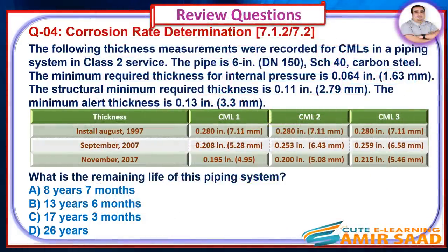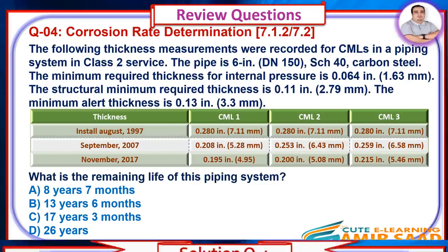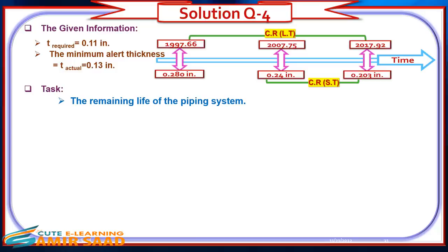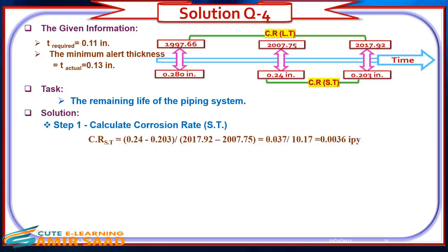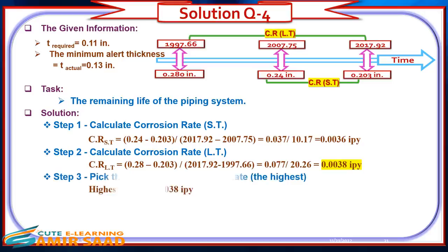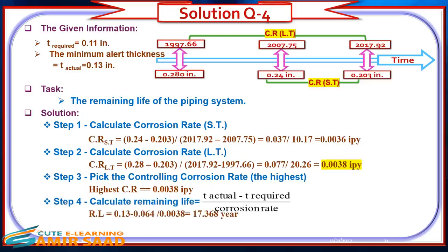Question 4: The following thickness measurements were recorded for CMLs in a Class 2 piping system. The pipe is 6-inch Schedule 40 carbon steel. Minimum required thickness for internal pressure is 0.064 inch, structural minimum is 0.11 inch, and minimum alert thickness is 0.13 inch. Solution: Step 2: Short-term corrosion rate. Step 3: Long-term corrosion rate. Step 4: Pick the highest. Calculate shortest remaining life. The answer is C: 17 years 3 months.